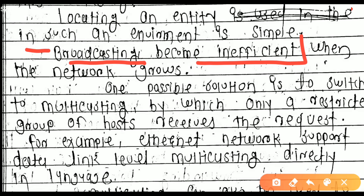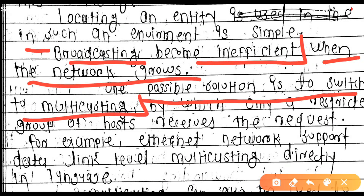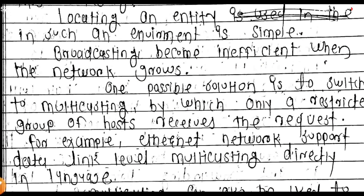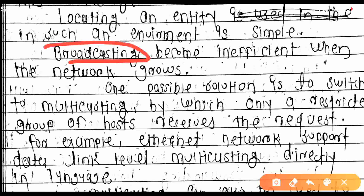When the network grows, one possible solution is to switch to multicasting. In multicasting and broadcasting, we deal with elements of the system such as servers, networks, printers, and IP addresses — all of this falls under broadcasting.